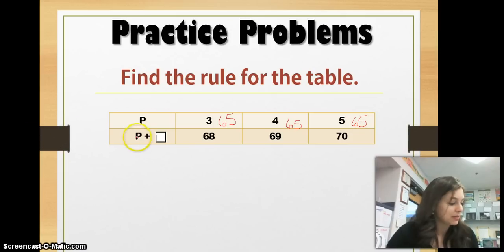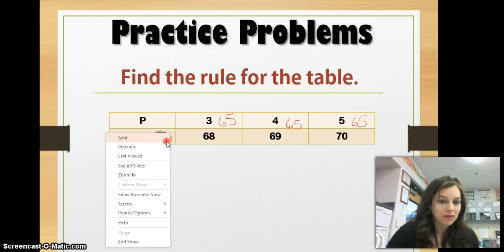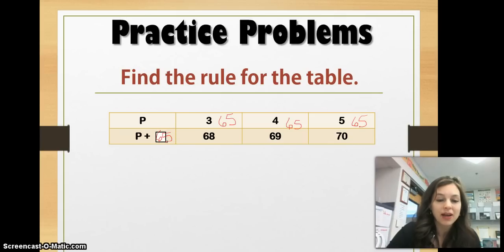We could take 5 and subtract from 70, and 70 minus 5 is 65. So, our answer is P plus 65. That's our rule. Is that what you got? If so, great job. If not, notice where you made your mistakes and go back and make your corrections.